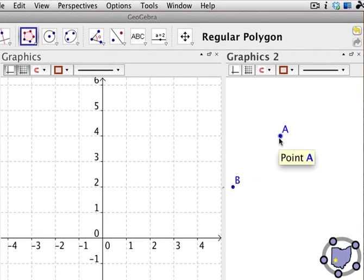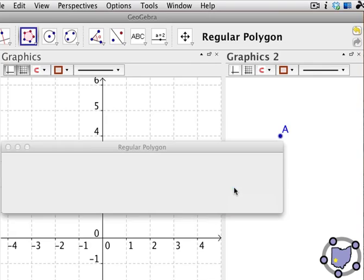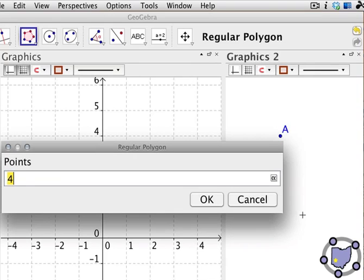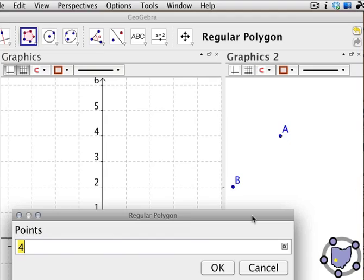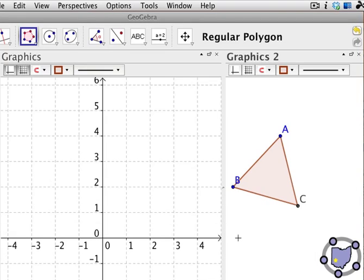And we're actually going to click on points A and B. A dialog box will show up asking us how many points we want in this regular shape. Basically, by clicking on A and B, we've specified the length of one side of our regular polygon. So we want three points. Once we click OK, a regular polygon should appear in the graphics 2 window. And it does.